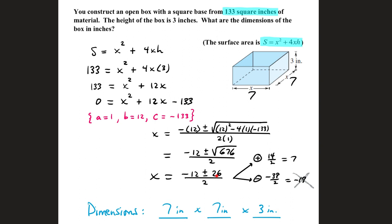Negative 12 plus 26 over 2 is 14 over 2, that's 7. Negative 12 minus 26 over 2 is negative 38 divided by 2, which is negative 19. Since we're talking about the length and width of a box, we're going to go with positive 7. So if x is 7, we have a 7 by 7 by 3 box.